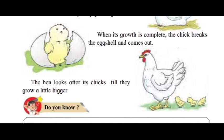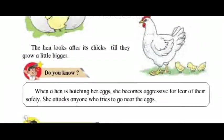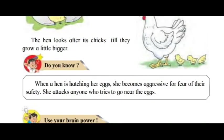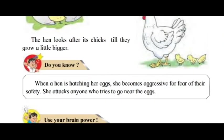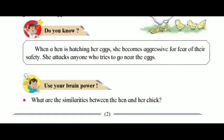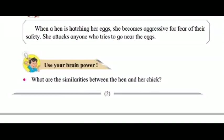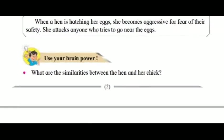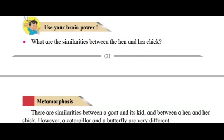When the chick's growth is complete, it breaks the eggshell and comes out. The hen looks after its chicks till they grow a little bigger. Did you know that when a hen is hatching her eggs, she becomes aggressive for fear of their safety? She attacks anyone who tries to go near the eggs. Use your brain power: what are the similarities between the hen and her chick?